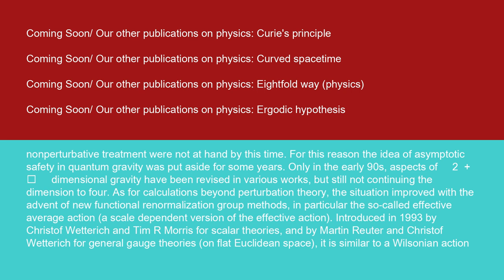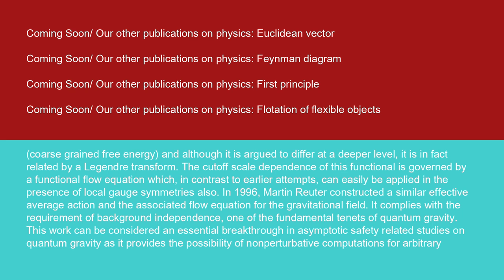Only in the early 90s, aspects of 2 plus epsilon dimensional gravity have been revised in various works, but still not continuing the dimension to 4. As for calculations beyond perturbation theory, the situation improved with the advent of new functional renormalization group methods, in particular the so-called effective average action, a scale-dependent version of the effective action. Introduced in 1993 by Christoph Wetterich and Tim R. Morris for scalar theories, and by Martin Reuter and Christoph Wetterich for general gauge theories on flat Euclidean space, it is similar to a Wilsonian action coarse grain-free energy, and although it is argued to differ at a deeper level, it is in fact related by a Legendre transform.